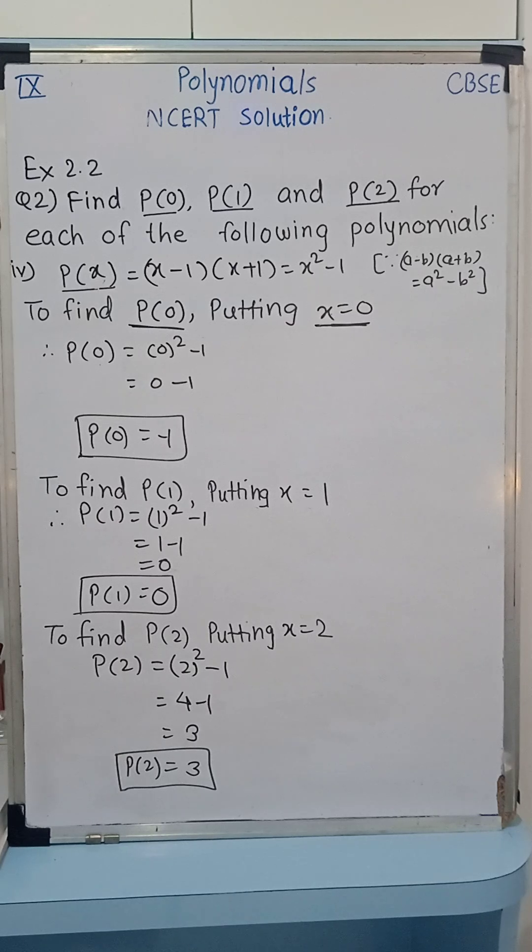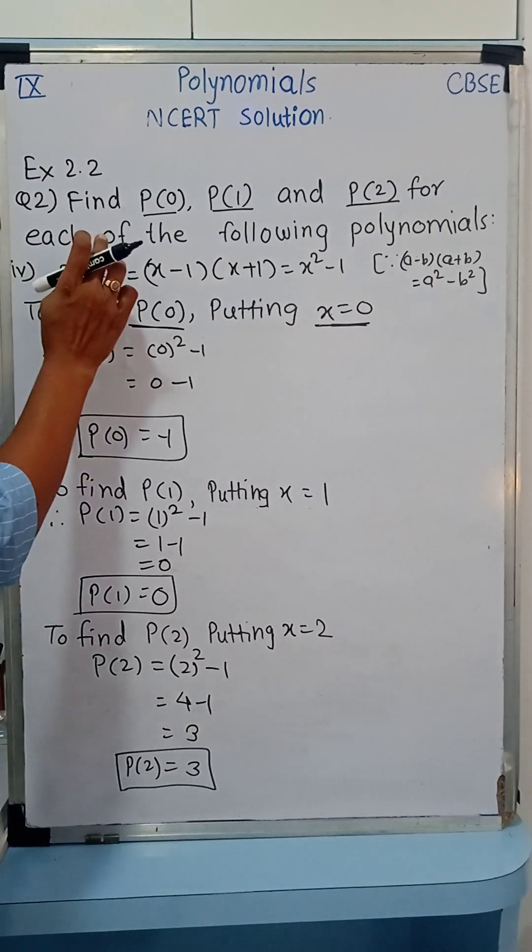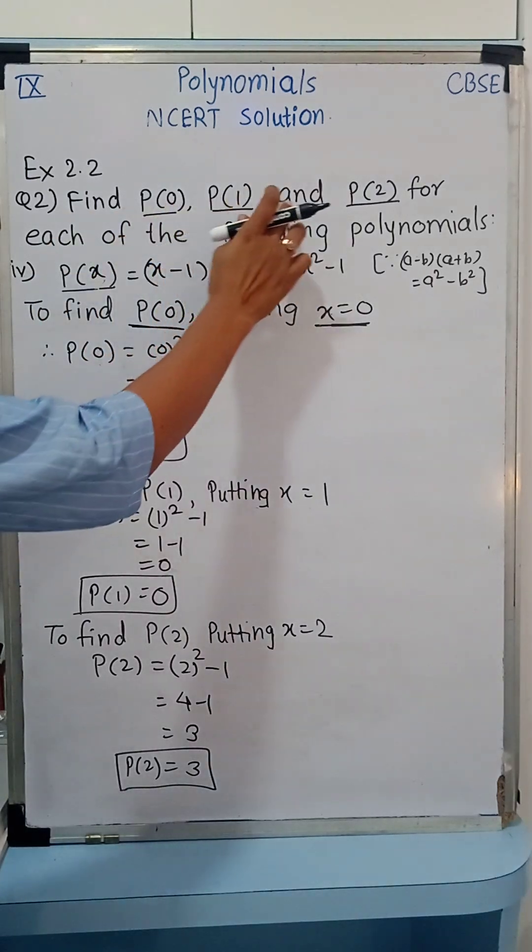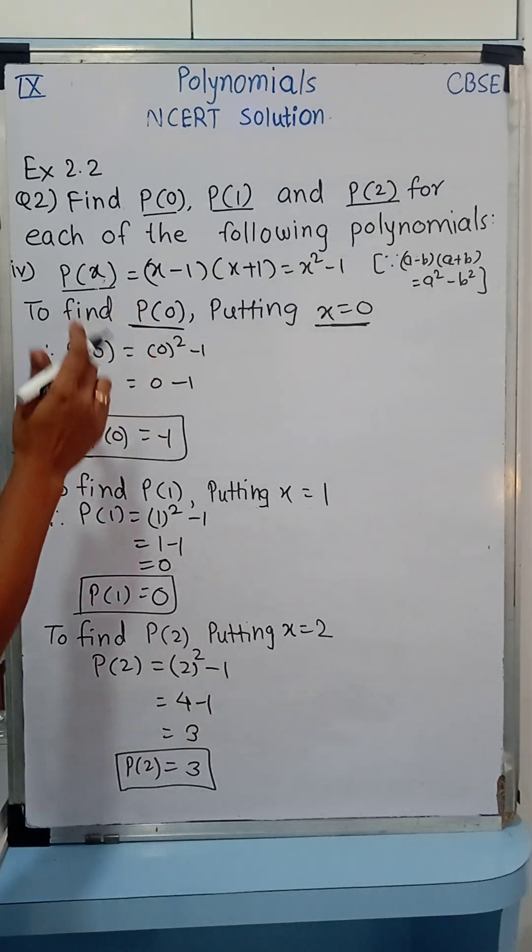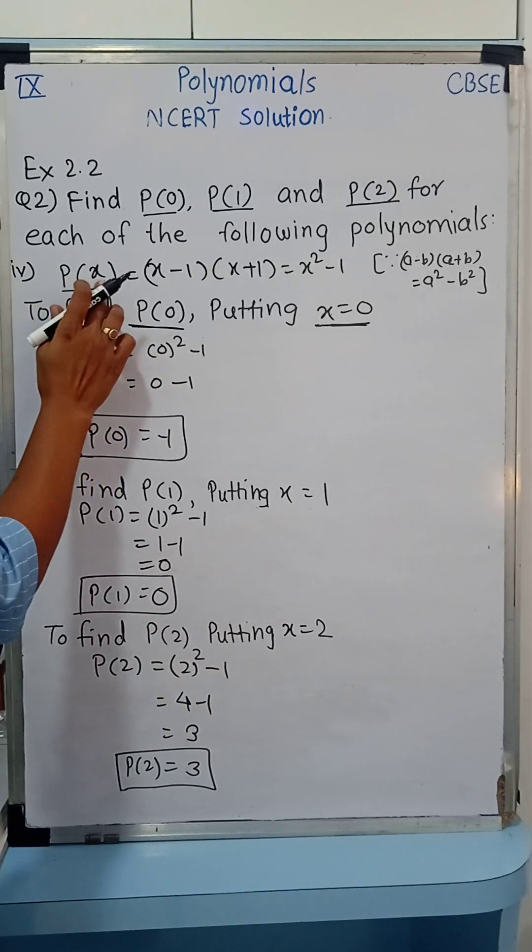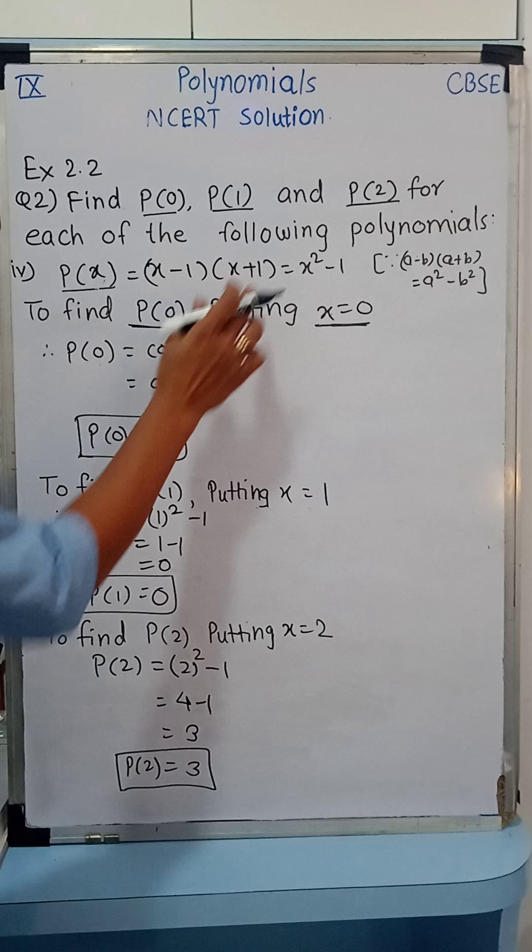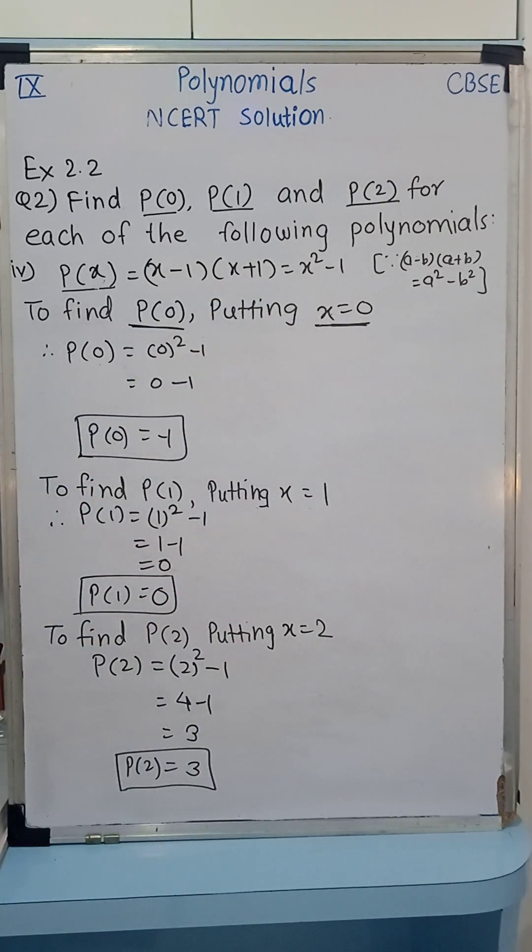Now here we are solving question number exercise 2.2, question number 2, fourth example. The question is that, find P(0), P(1) and P(2) for each of the following polynomials. Here polynomial is given, P(x) is equal to (x-1)(x+1). Here we have given the factors.